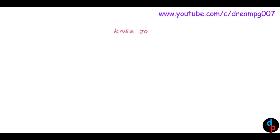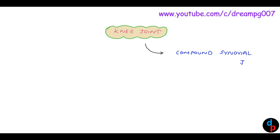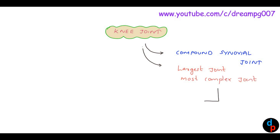Let's have a look into some of the important points of the knee joint. The knee joint is a compound synovial joint. It is the largest joint in the human body. It is also the most complex joint, in the sense that it is a combination of some simple joints.